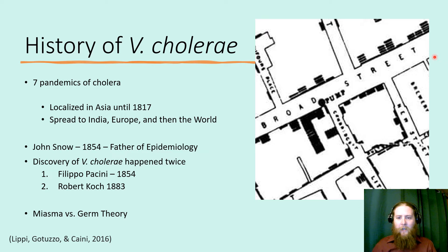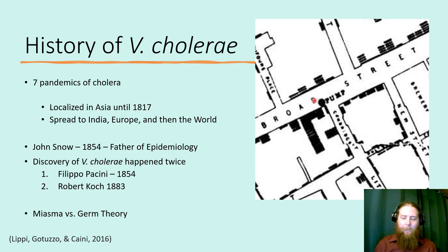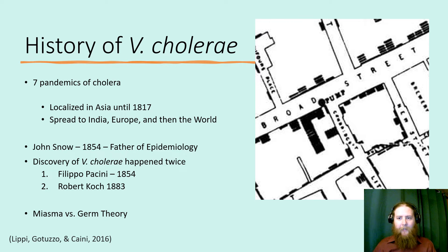John Snow, in 1854, is sometimes referred to as the father of epidemiology. During a cholera outbreak in London, he used a scientific process to localize the source of disease to a contaminated pump — the Broad Street pump. His map shows each case of cholera marked with a dash, clustered around that pump. While miasma theory was still common at the time, Snow's work helped stop the spread of cholera.